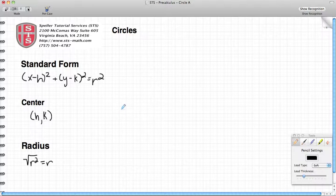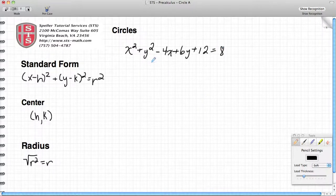The example that we're going to look at today is x squared plus y squared minus 4x plus 6y plus 12 is equal to 8. As you see, this equation here is not in standard form. So for us to be able to tell what the center is and the radius, we're going to have to change this equation into something that looks more like this standard form.